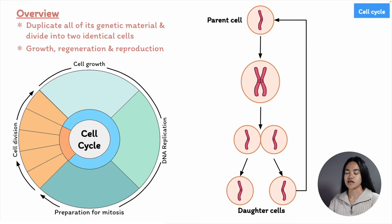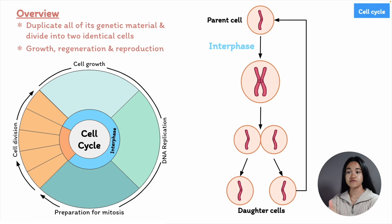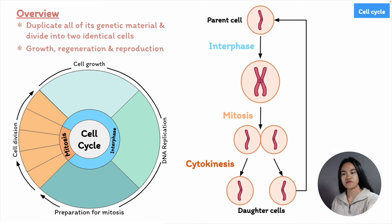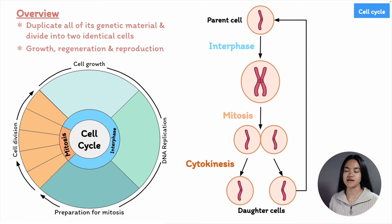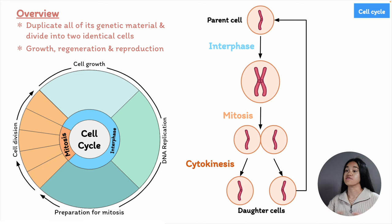The stages of the cell cycle are divided into two major phases: interphase and the M phase. During interphase, the cell grows and makes a copy of its DNA — it needs to replicate its DNA. And during the M phase, the cell distributes the two copies to opposite ends and divides its cytoplasm, forming two new cells.